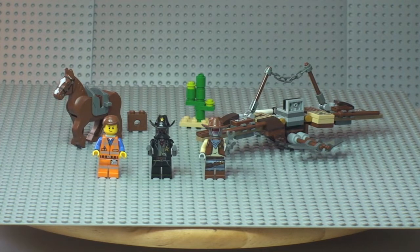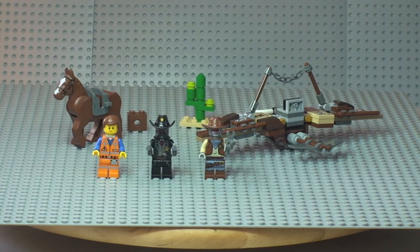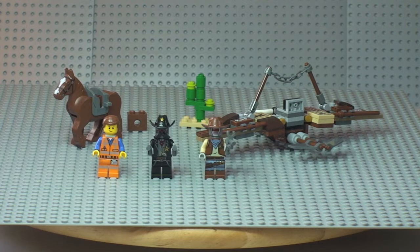So they are Emmett with his precious piece of resistance, which we will show you in a second, the Deputron, and Sheriff Not a Robot. So let's take a look at those minifigures first.